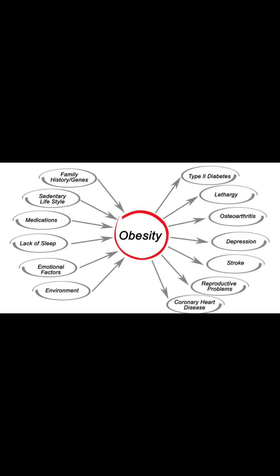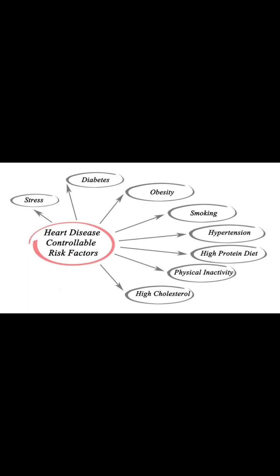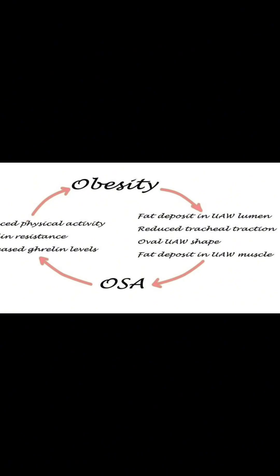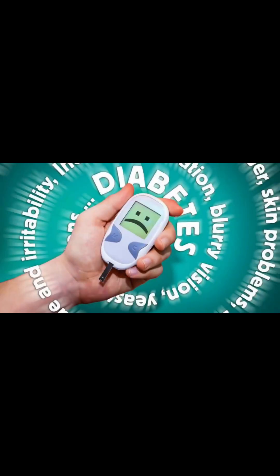Diabetes prevalence has been steadily increasing worldwide, driven primarily by the rise in type 2 diabetes due to factors such as sedentary lifestyles, unhealthy dietary habits, and increasing rates of obesity. According to the International Diabetes Federation (IDF), approximately 463 million adults aged 20 to 79 years were living with diabetes globally in 2019, with this number expected to rise to 700 million by 2045 if current trends persist.